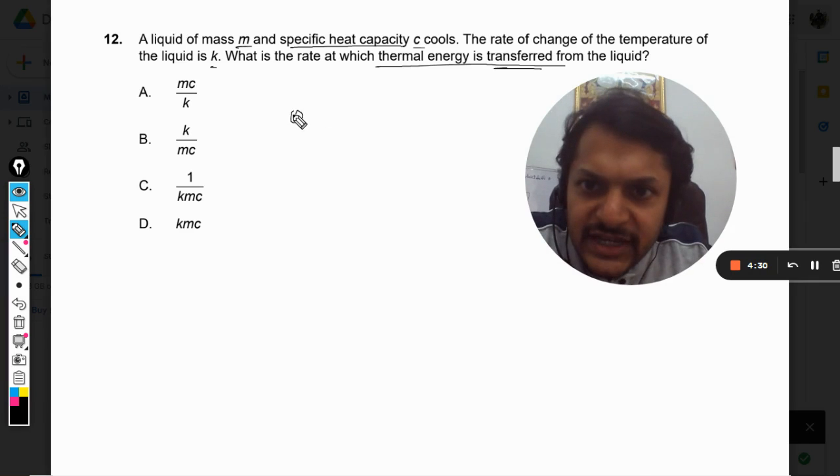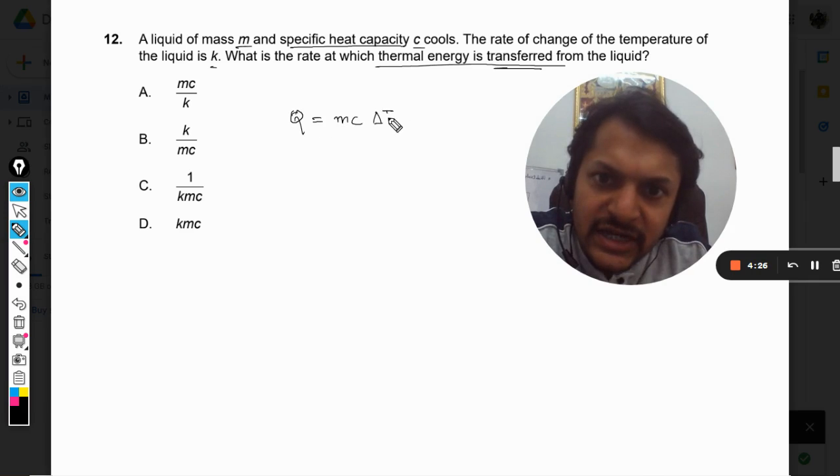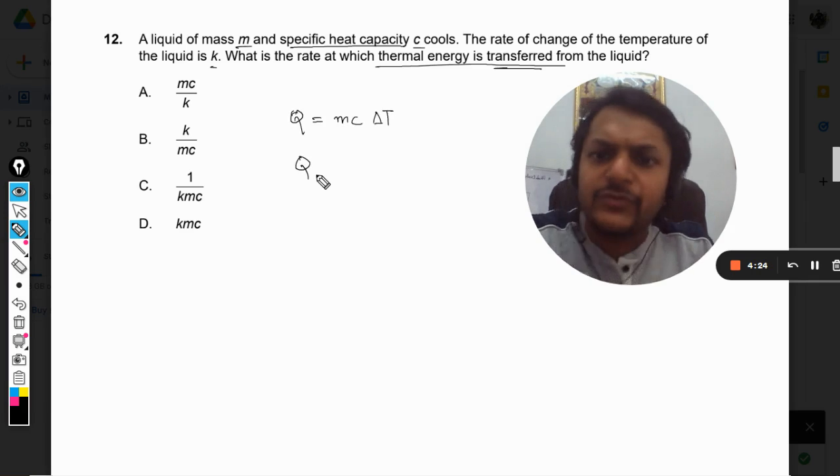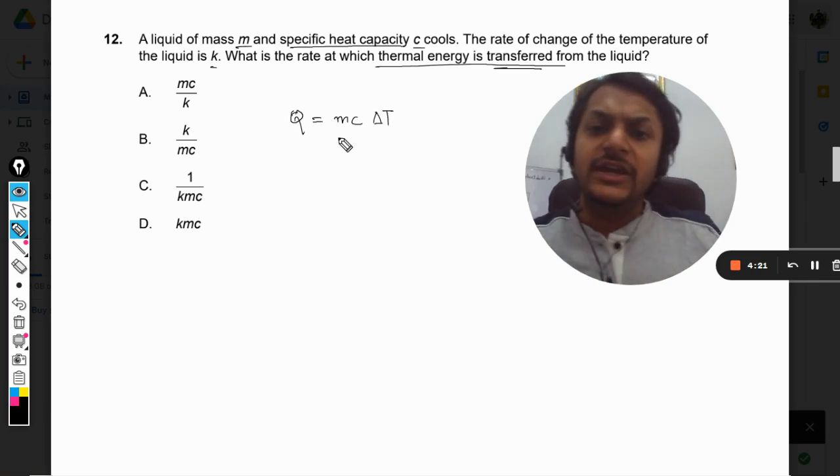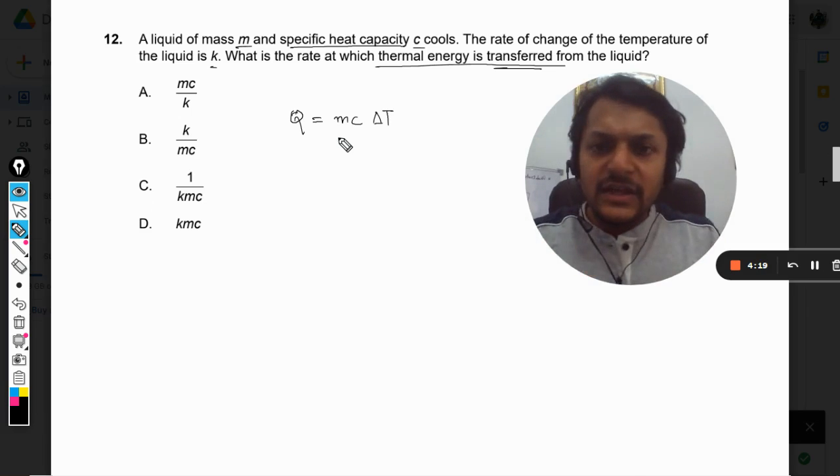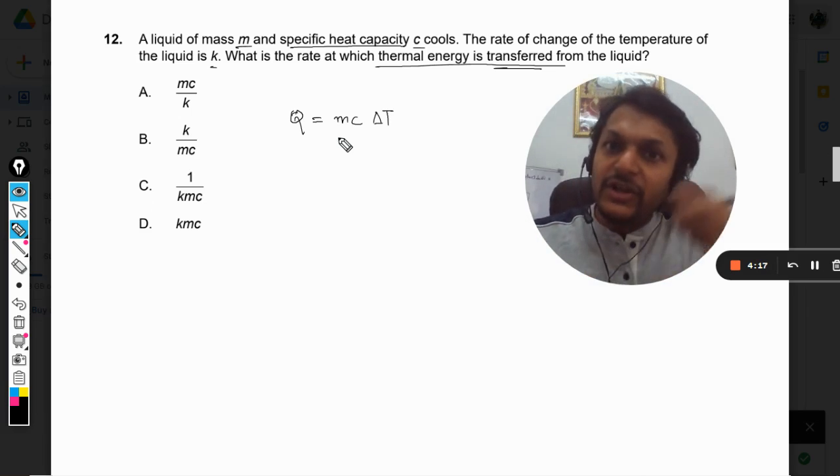So I can just say that Q will be equal to mc∆T, which can be written as Q = mc∆T. This is the heat that the liquid will lose if the temperature of the liquid is changing by ∆T.